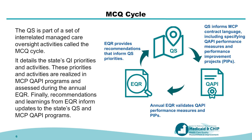The quality strategy is part of a set of interrelated managed care oversight activities called the managed care quality, or MCQ, cycle. The managed care quality cycle starts with the quality strategy, which details the state's quality improvement priorities and activities. The quality strategy priorities and activities inform managed care plan contract language, including specifying quality assessment and performance improvement (QAPI) performance measures and performance improvement projects, or PIPs. Managed care plan QAPI performance measures and PIPs are then validated during the annual external quality review, or EQR. Finally, recommendations and learning from EQR inform the state's quality priorities, including potential updates to the quality strategy and managed care plan QAPI programs.